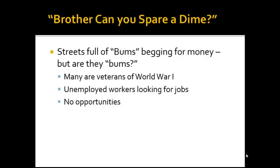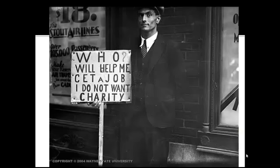The streets were full of people begging for money — but are these people really bums? In the song "Brother Can You Spare a Dime," written during this time, the singer points out that many of these people begging for a dime are veterans of World War I and unemployed workers who had built the railroads and built skyscrapers. But they were all now unemployed, looking for jobs. There were simply no opportunities, even for hardworking people. Here's a picture of a man that illustrates this point — people would take to the street with signs saying they don't want charity, they want jobs. But this opportunity was just simply not there.